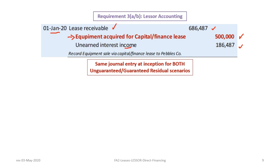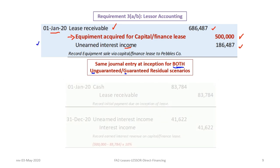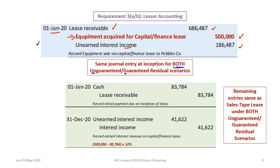The lease receivable and unearned interest income accounts exist in the same amounts as in the sales type lease, except the sales type lease also includes sales revenue, cost of goods sold, and inventory. Importantly, the journal entry at inception is the same for both guaranteed and unguaranteed residuals, so it doesn't matter which scenario you have — the entry is identical.